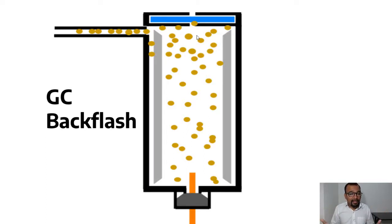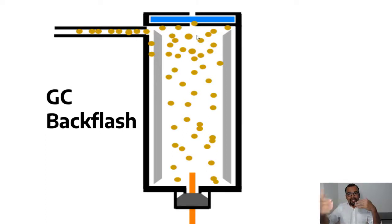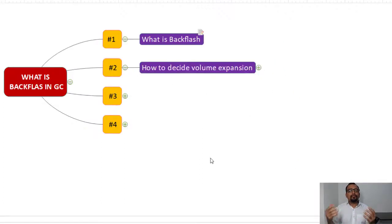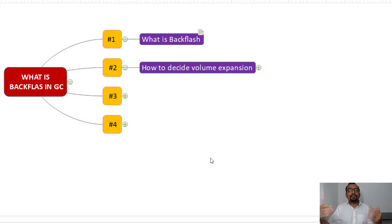We are going to talk about what are the reasons behind the back flash. The back flash happens because of the expansion in volume. So what is the term really causing the expansion of the gas volume?